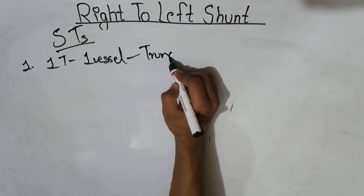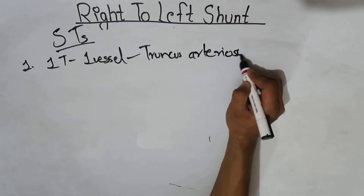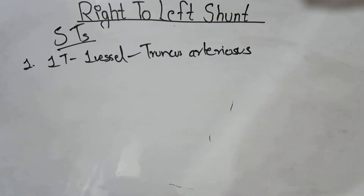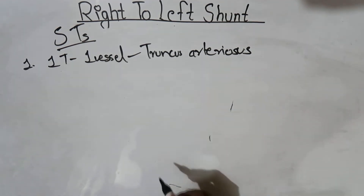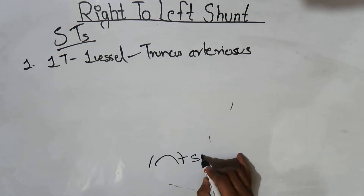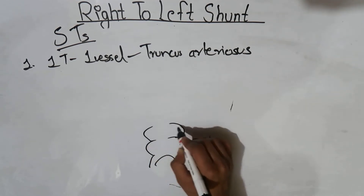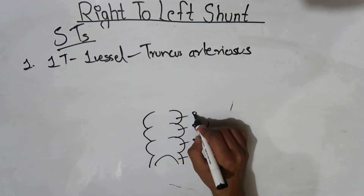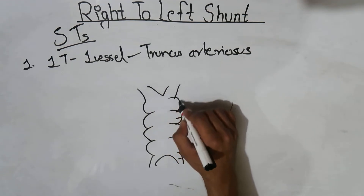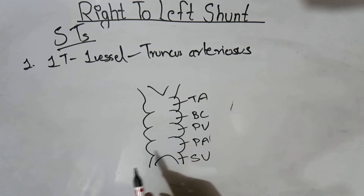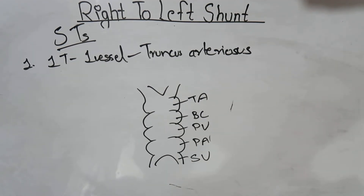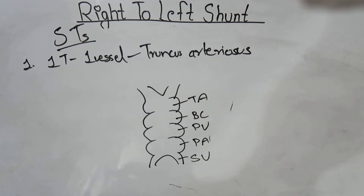One T means one vessel — that vessel is Truncus Arteriosus. Truncus arteriosus is a part of the primitive heart tube which later gives rise to the aorta and pulmonary trunk. Let me draw a rough sketch of the primitive heart tube: here we have sinus venosus, this is the primitive atrium, primitive ventricle, then bulbus cordis, and here we have truncus arteriosus. This structure later on gives rise to the aorta and pulmonary trunk by the formation of the aorticopulmonary septum. But if there is a congenital defect — failure of formation of the aorticopulmonary septum — then there is persistence of truncus arteriosus, which leads to right-to-left shunting of the heart.